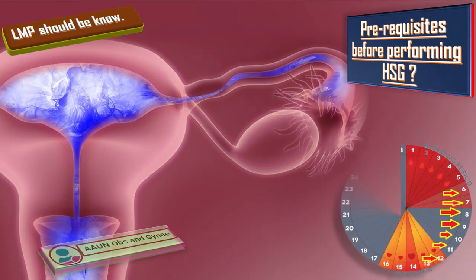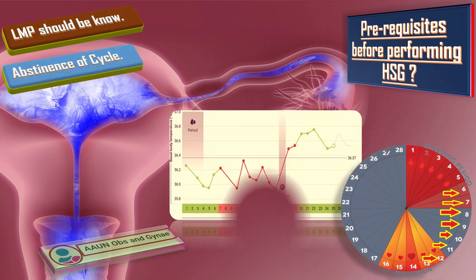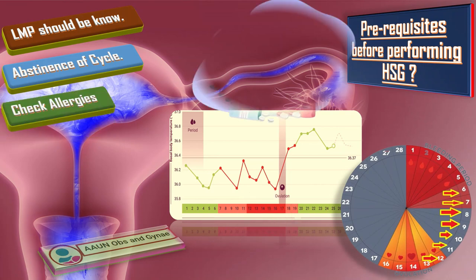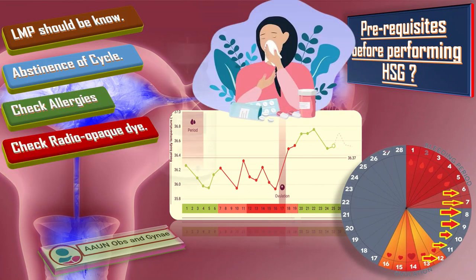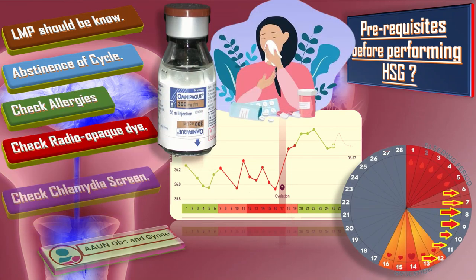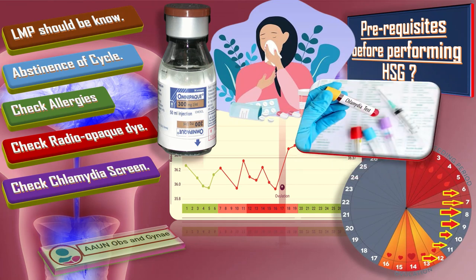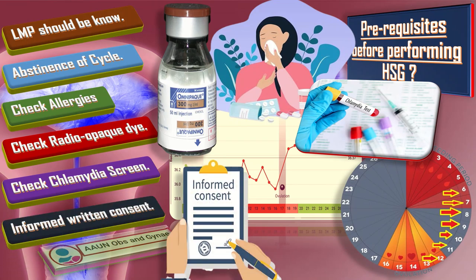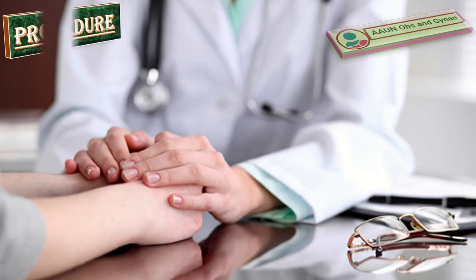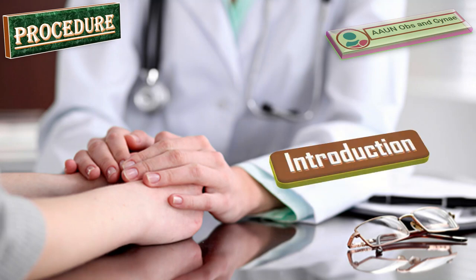The prerequisites before performing HSG include: first, LMP should be known — ideally HSG should be performed during days 6 to 12 of the cycle; second, abstinence; third, check allergies; fourth, check the radio-opaque dye and its expiry date; fifth, check chlamydia screen or give prophylactic antibiotics; and sixth, obtain written informed consent.